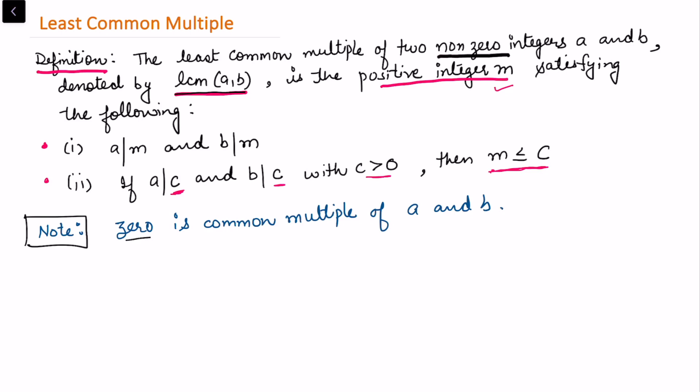so by well-ordering principle that I have done in my last video, the set must contain a least element and hence we try to find the least common multiple. Now let's take an example for this.